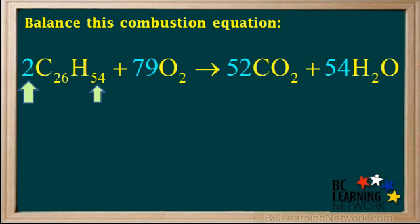We have 54 times 2 equals 108 hydrogens on the left. And 2 times 54 equals 108 hydrogens on the right. So hydrogens are balanced.